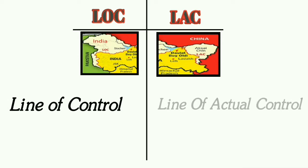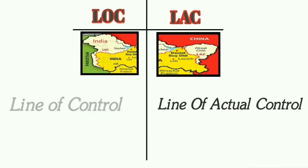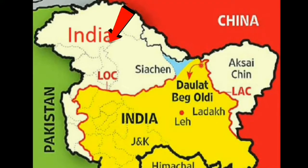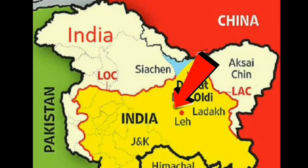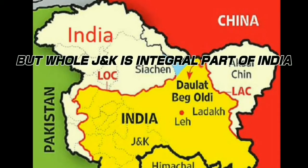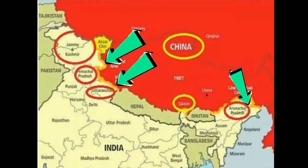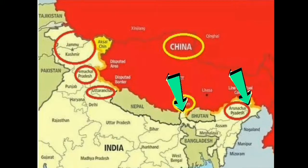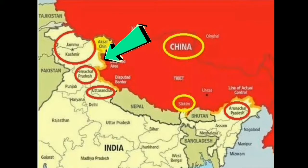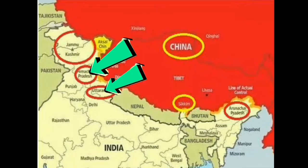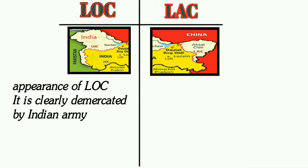The full form of LOC is Line of Control and the full form of LAC is Line of Actual Control. The Line of Control covers three areas of Jammu and Kashmir: Azad Kashmir, Gilgit, and Baltistan occupied by Pakistan, and two-thirds — Jammu, Ladakh, and Kashmir Valley — administered by India. The Line of Actual Control is scattered across three areas: the eastern Indian states of Sikkim and Arunachal Pradesh, the western areas of Ladakh and Kashmir, and the middle areas of Uttarakhand and Himachal Pradesh.